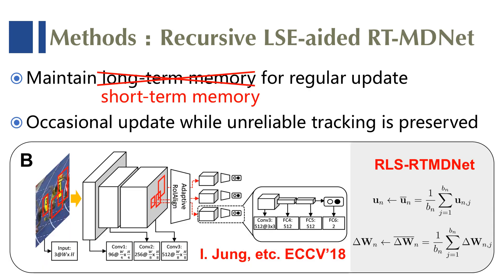This recursive online updating method can be seen as a plug-and-play addition into existing methods. We apply it to replace the original mini-batch SGD in the online tracking phase of RTMDNet, leaving all other parts almost unchanged, especially under the same off-the-shelf network model and hyperparameters. Note that we do not need to maintain long-term memory to achieve robustness anymore.